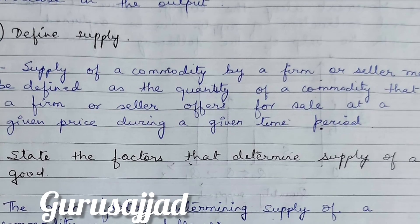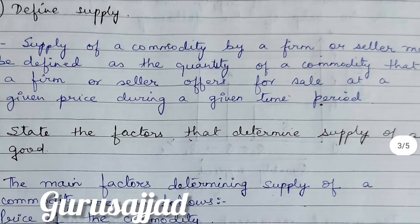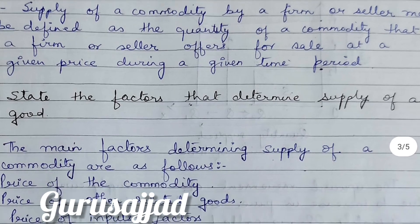Next question: Define supply. Supply of a commodity by a firm or seller may be defined as the quantity of a commodity that a firm or seller offers for sale at a given price during a given time period. Supply is the amount of a commodity that a seller is ready to sell at a given time and at a given price.